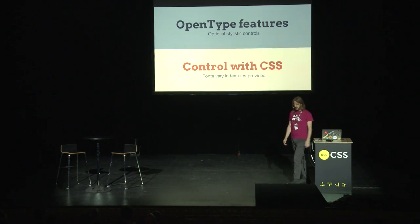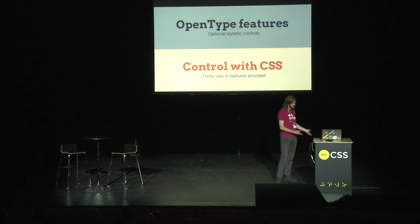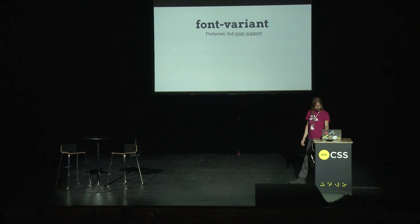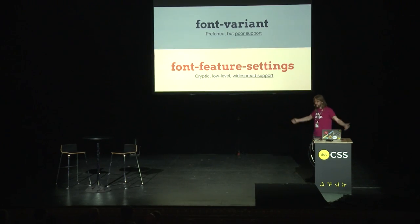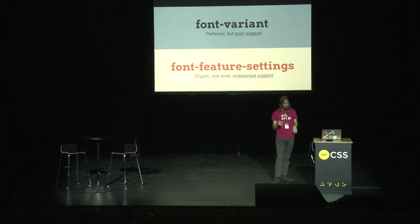OpenType features are stylistic controls, typically optional — though for some languages they're actually required to display the language. The idea is that you control them with CSS; you want control over the typography in your style sheet, not buried in the font somewhere. Throughout this talk, I'm going to be using the font-variant property, which is preferred — it's readable. I'm also giving this talk in Firefox, because that's the only browser I've found so far that supports it properly. There's also font-feature-settings, which are in all the browsers, but they use horrible cryptic four-letter codes. Don't use those — well, you may have to for polyfills for now. Every time I mention only one browser doing it, I hope the others have sufficient shame that they get their act together.